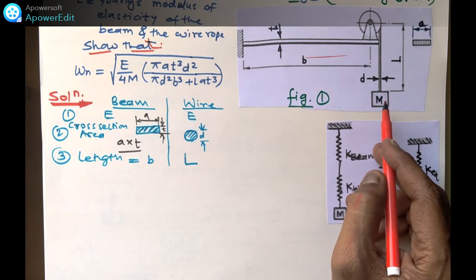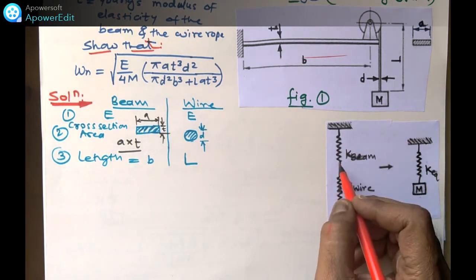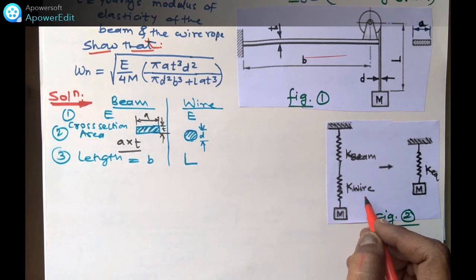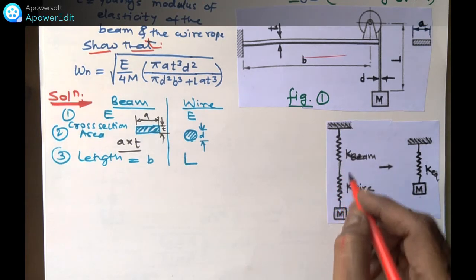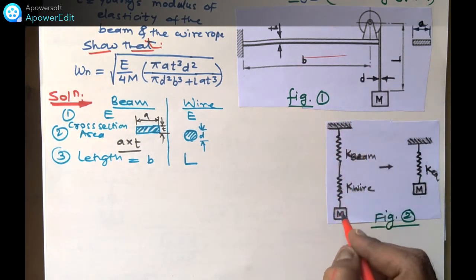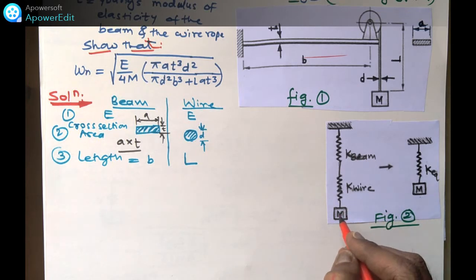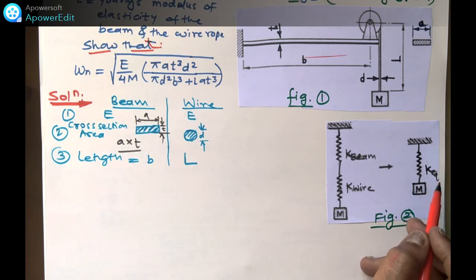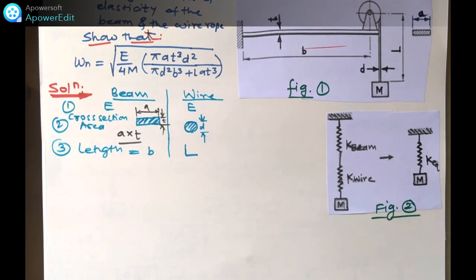To prove this, we consider the beam with some stiffness k_beam — it is treated as a spring. The wire is also considered as a spring with stiffness k_wire. From the figure it will be clear that these two springs are in series, with mass M attached at the end. By using the series formula, we can find the equivalent stiffness k_equivalent.